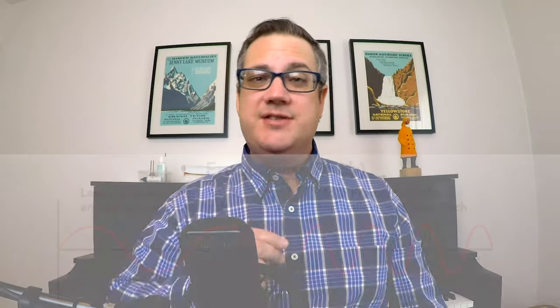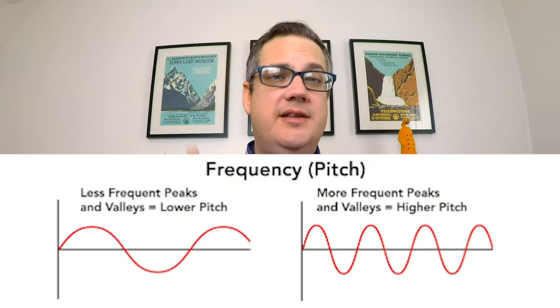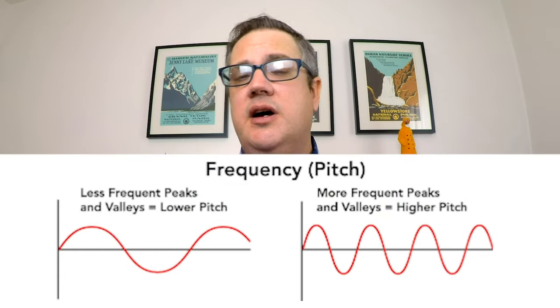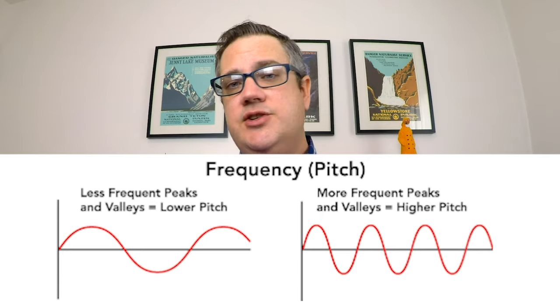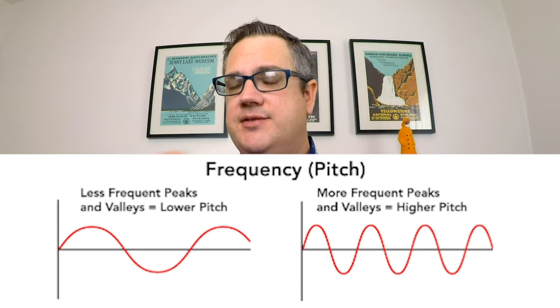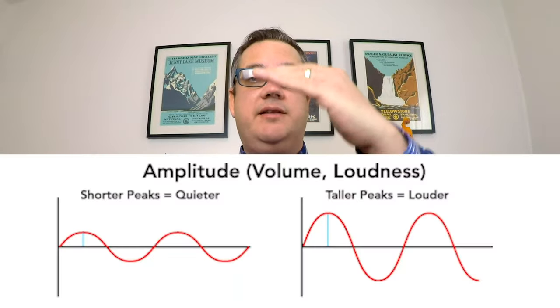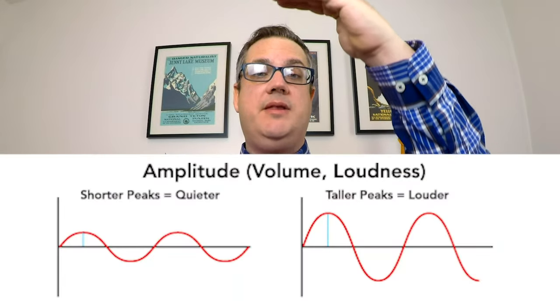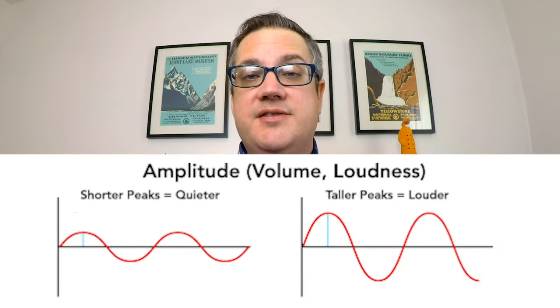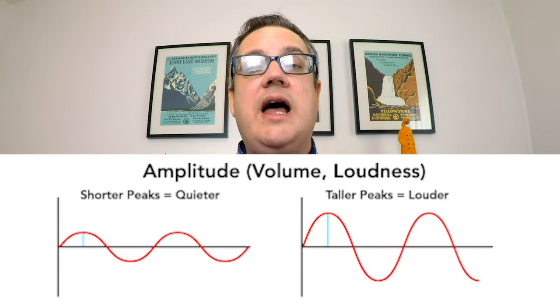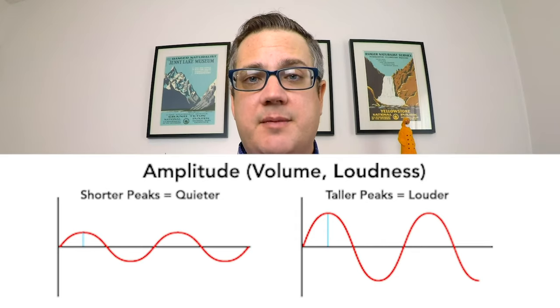Frequency is how fast those sound waves are occurring, and the faster the sound waves the higher the pitch — we attribute frequency to how fast those sound waves are going up and down. The amount of length between the top and the bottom of the sound wave has to do with how loud or soft something is, with dynamics.